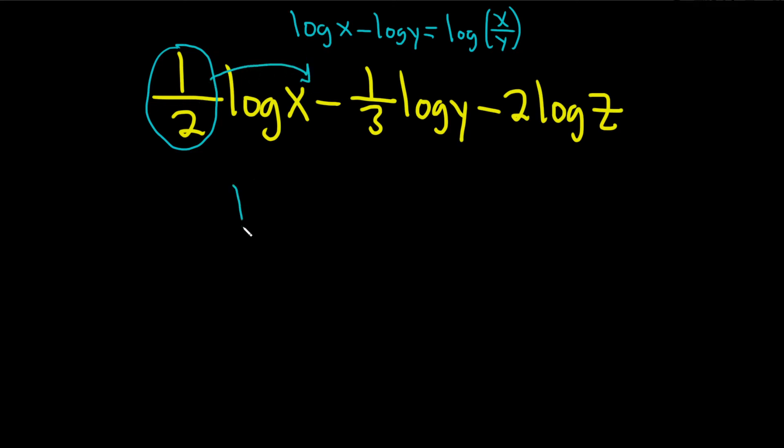So this becomes the log of x to the one-half minus the same thing here, so it becomes the exponent. I left the negative. You could bring the negative up, by the way, and make it a plus, but that usually makes it worse. So I usually just leave the negative alone and bring up the number.